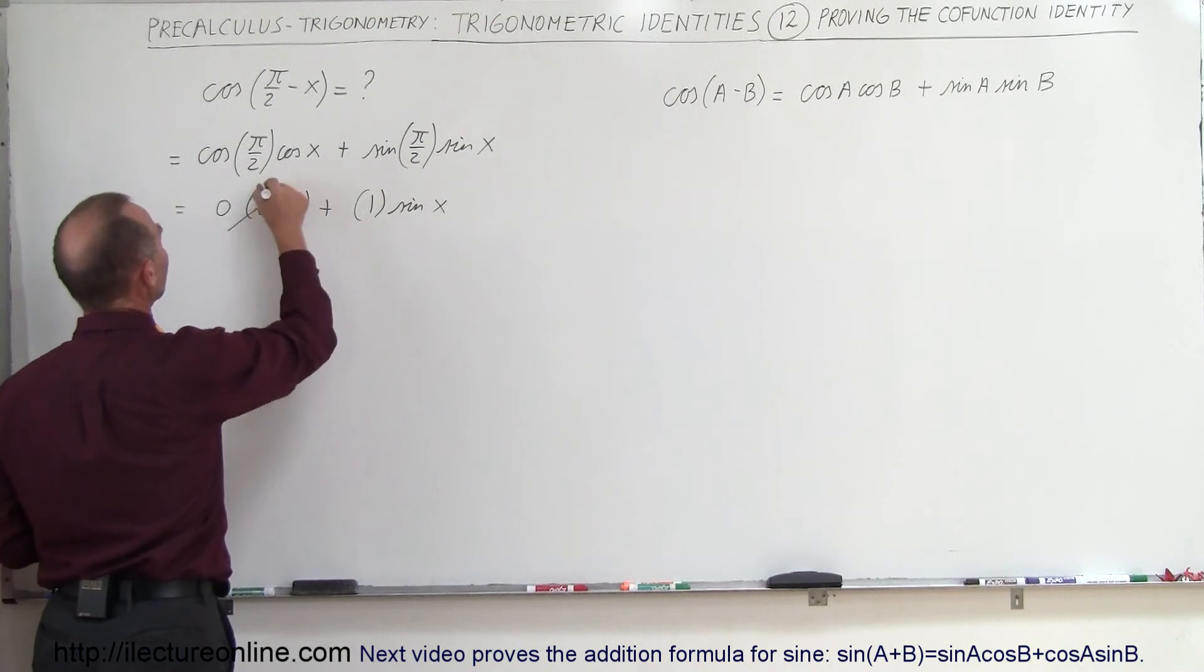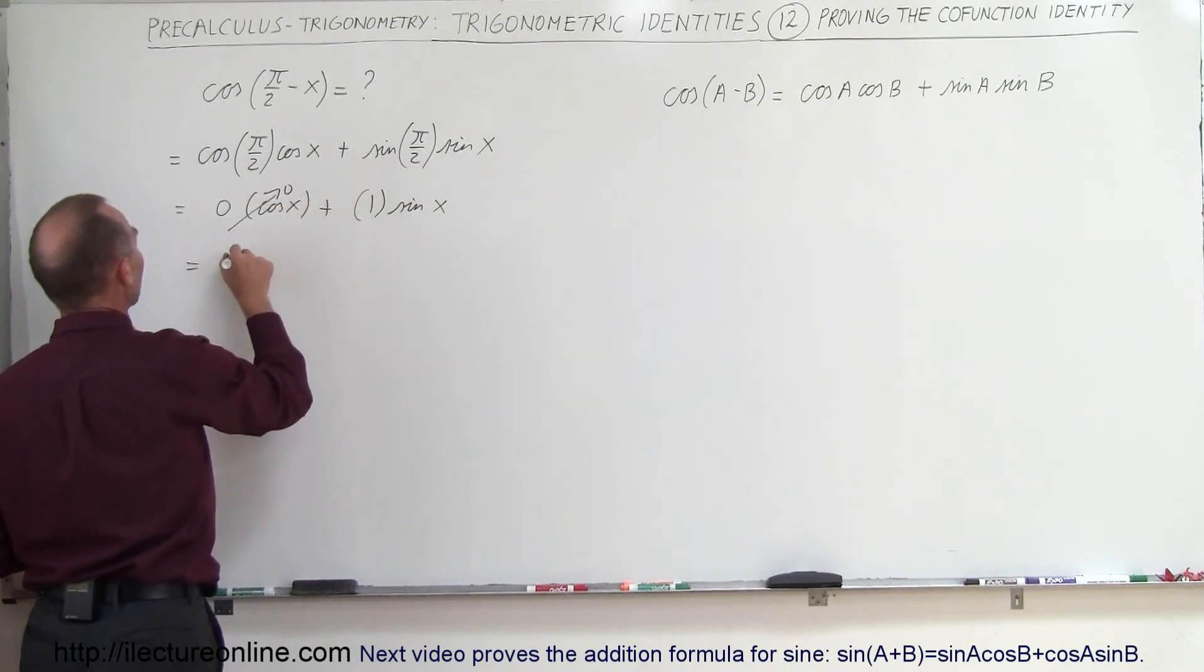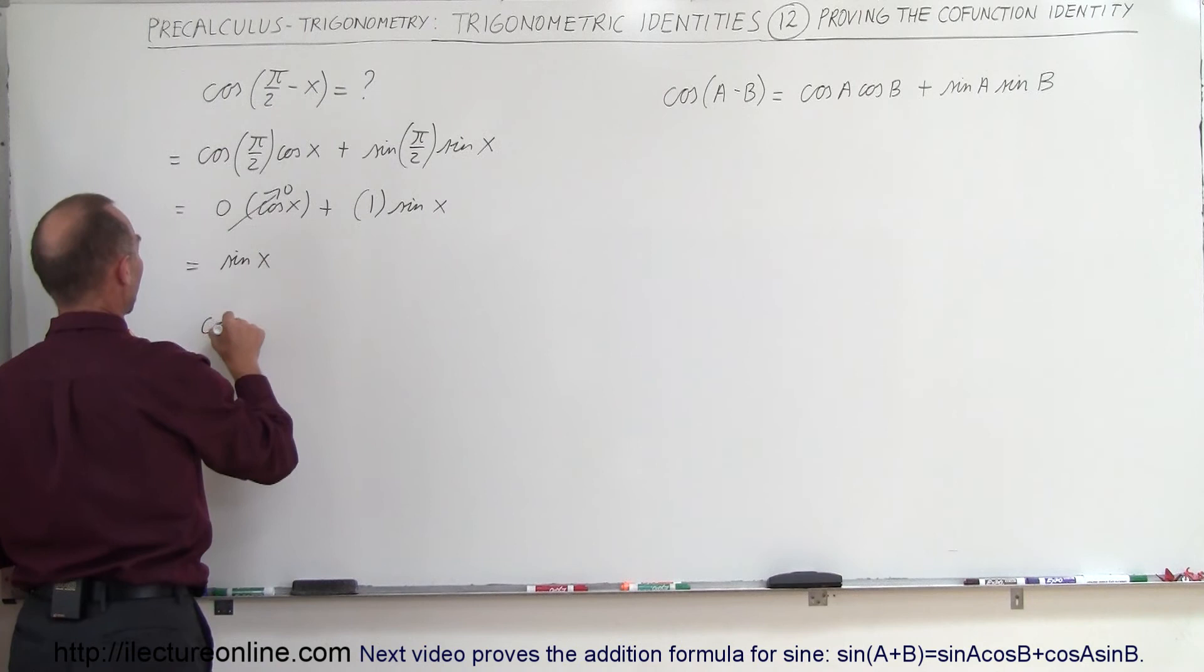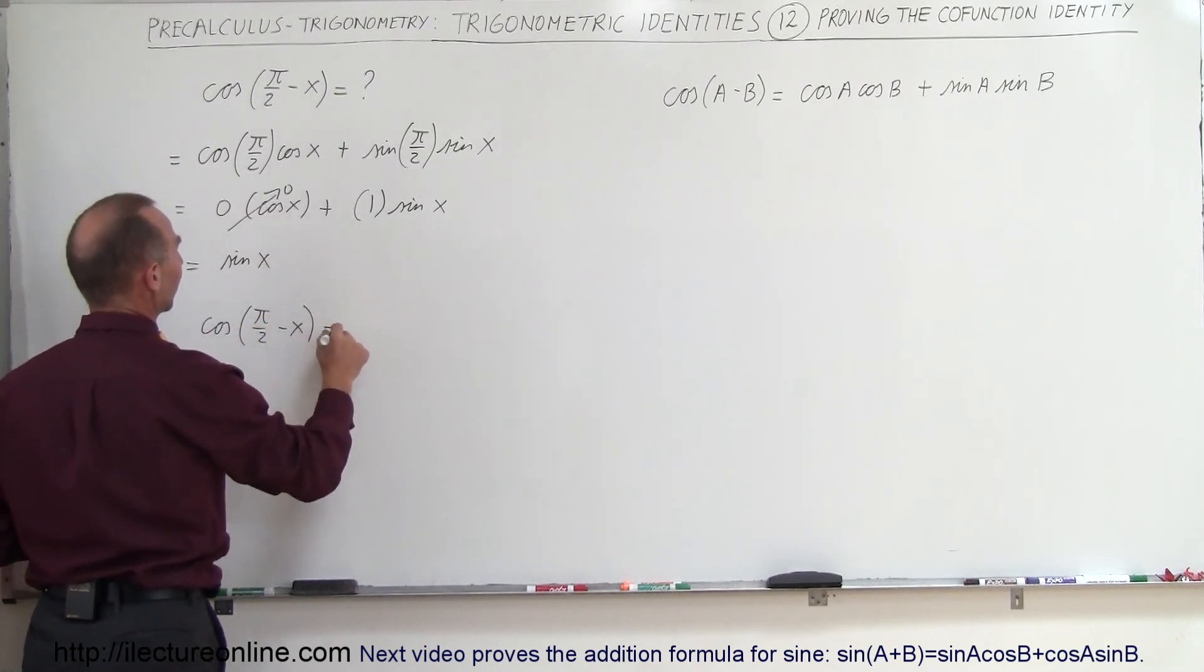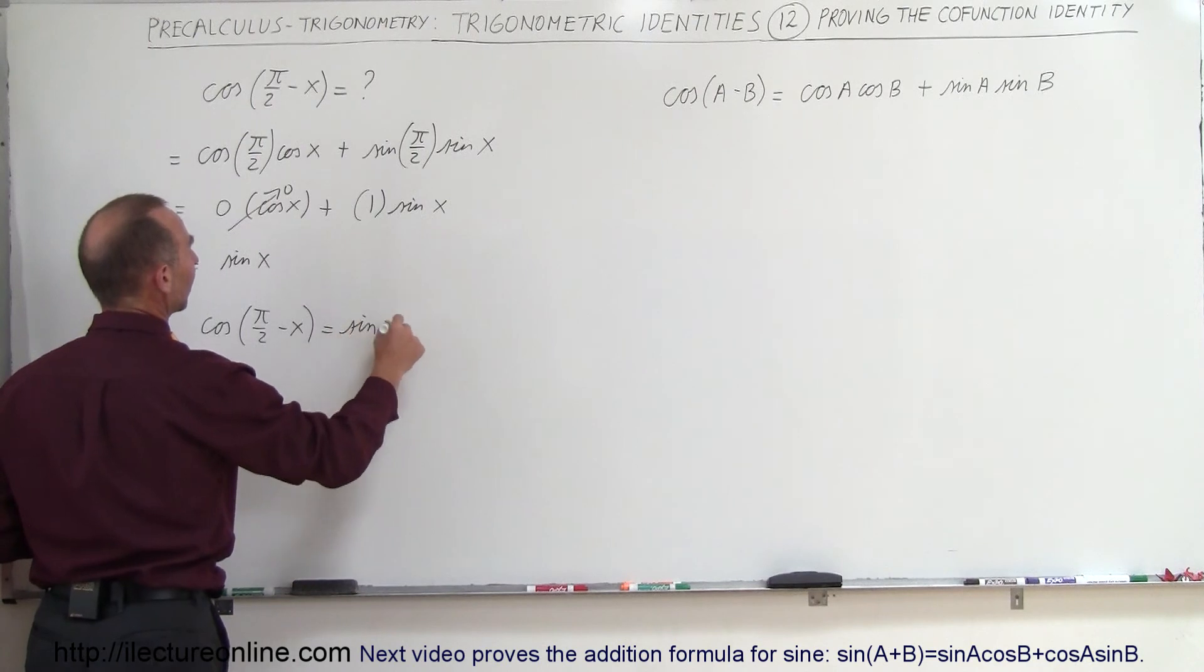And so this will then cancel out, and this is equal to the sine of x. Therefore we know that the cosine of pi over 2 minus x is equal to the sine of x.